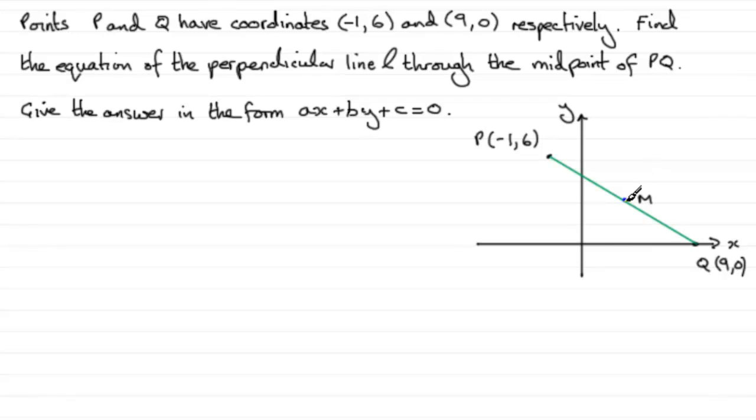A perpendicular line then is one at right angles, so we're looking at a line coming down through here, something like this. It's at right angles, 90 degrees.